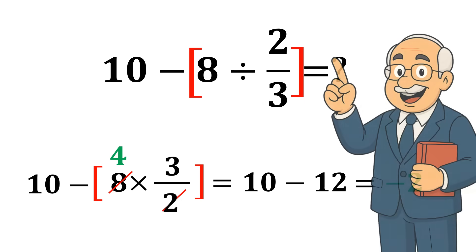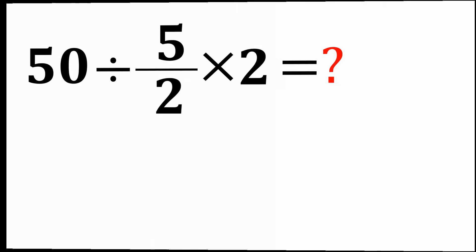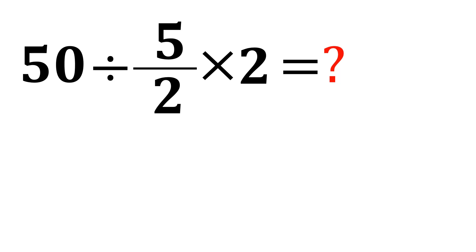If you'd like to go deeper into PEMDAS and see more tricky examples, I definitely recommend watching a full video just on that topic. So let's solve our original problem. According to PEMDAS, division and multiplication have equal priority, so we start from the left and handle the division first: 50 divided by 5/2.